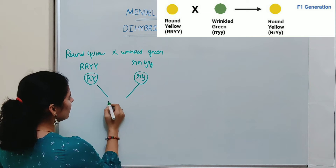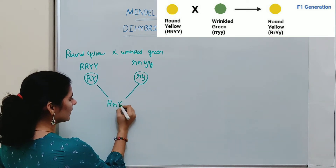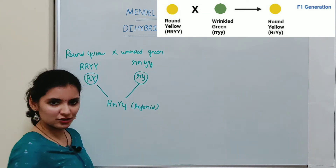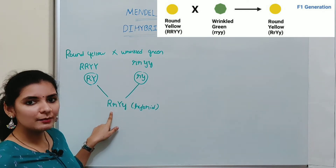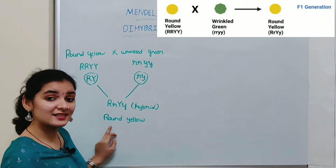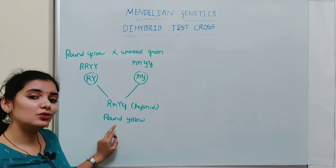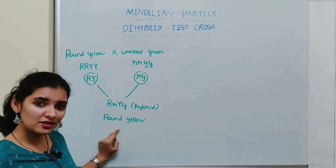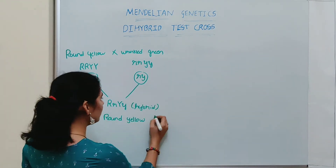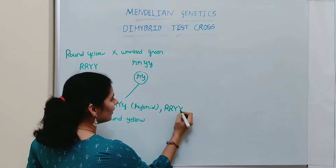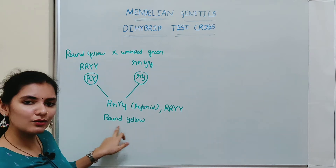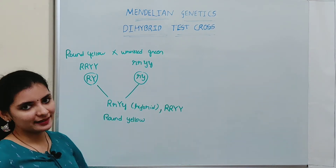If you make a cross between these two, you will get a hybrid plant with genotype RrYy. This is the hybrid plant that Mendel got in the F1 generation, and the phenotype of this plant is round and yellow seeds. But he didn't know the genotype of this plant, so to find out the genotype, he did a test cross by crossing this plant with a double recessive parent. The genotype could even be RRYY — like that of one of the parents — which also produces round and yellow seeds, so a test cross was needed to confirm the genotype.